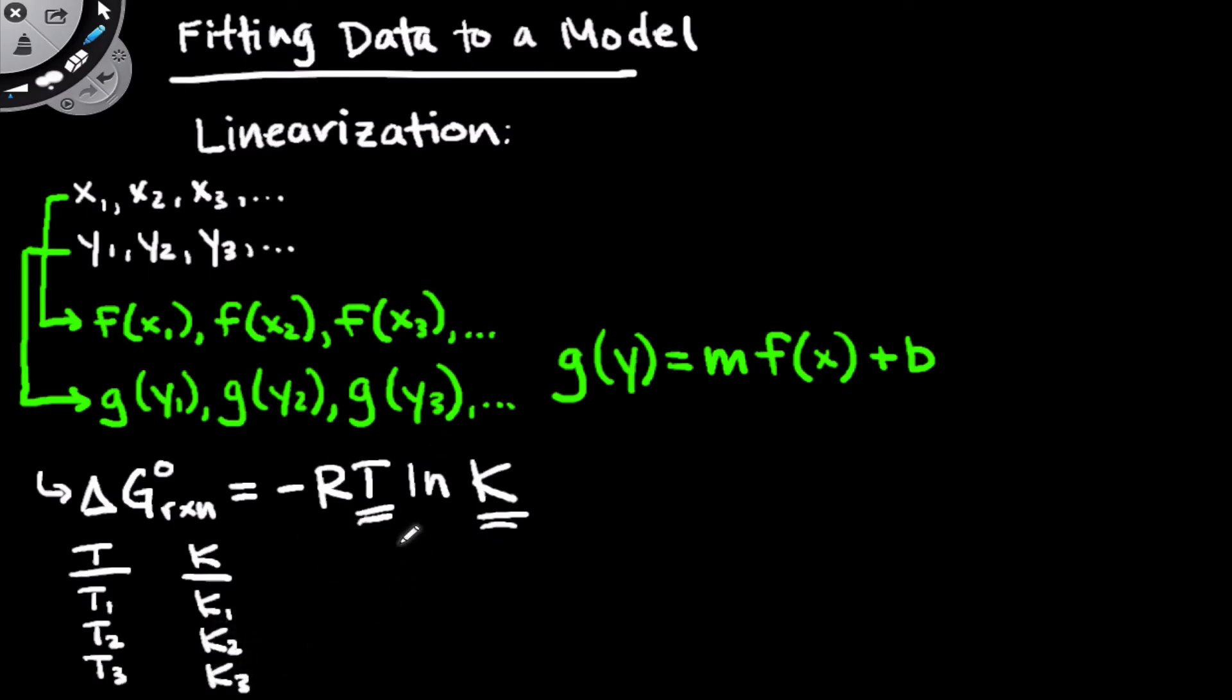Now given the form of this relationship, it looks complicated, right? T and the natural log of k are inversely related. Given the form of this relationship, we're not going to see a linear graph if we plot k on the y-axis and t on the x-axis. However, we can linearize this equation so that we get a y equals mx plus b type format for this.